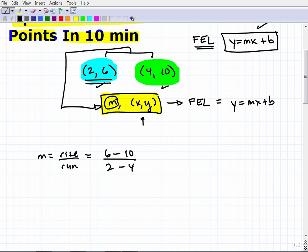Notice I underline this point first. The reason why I do that is if I start with the 6 on top with my Y, I'm going to have to start with the 2 on bottom from this point's information. Because if you don't stay consistent in the order here, you're going to get your slope wrong. So let's go ahead and calculate this. 6 minus 10 is negative 4, and 2 minus 4 is negative 2, and of course that is 2. So our slope is 2.